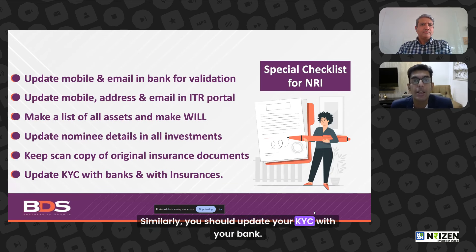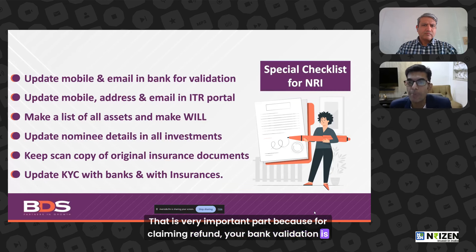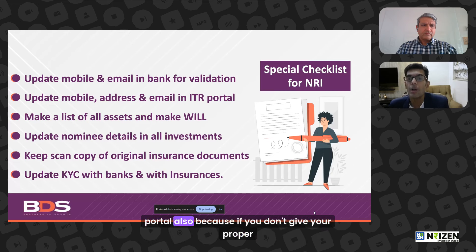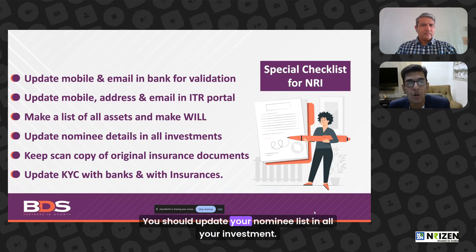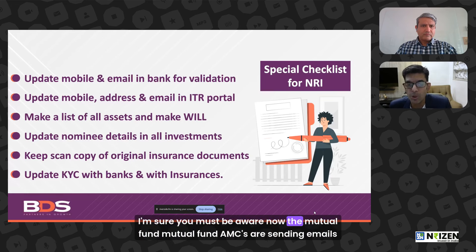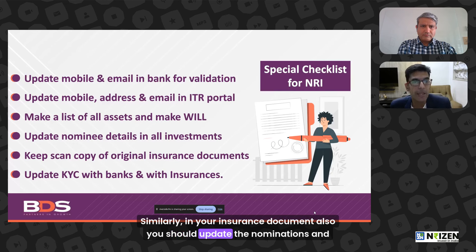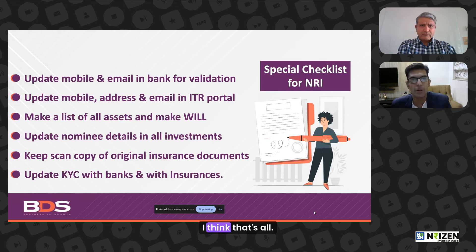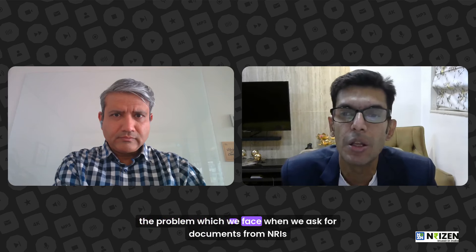Update your KYC with your bank — mobile number and email — because for claiming a tax refund, bank validation is very important on the income tax portal. Also update your mobile number and email ID on the income tax return portal, so you are notified of any notices. Update your nominee list in all your investments; mutual fund AMCs are now sending emails making nomination mandatory. Similarly, update nominations in your insurance documents and keep copies of those insurance documents. These are the key checklist items based on past experience dealing with NRI document issues.